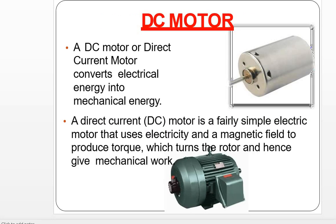First of all, if we look at DC motor and elaborate on the name, it is called Direct Current Motor. This means that it is a motor that we supply with DC current. The motor produces mechanical work — that means it converts electrical energy into mechanical energy.